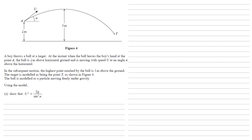In the subsequent motion, the highest point reached by the ball is 3 metres above the ground. The target is modelled as being the point T, as shown in figure 4. The ball is modelled as a particle moving freely under gravity. Using the model, show that U squared equals 2G over sine squared alpha.